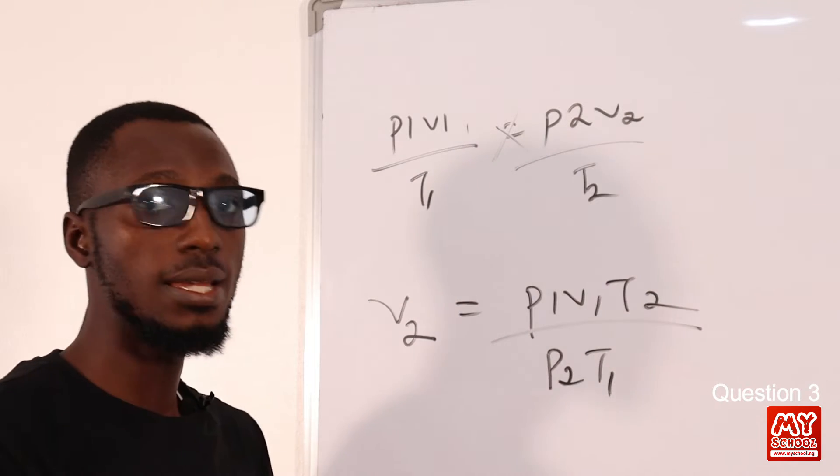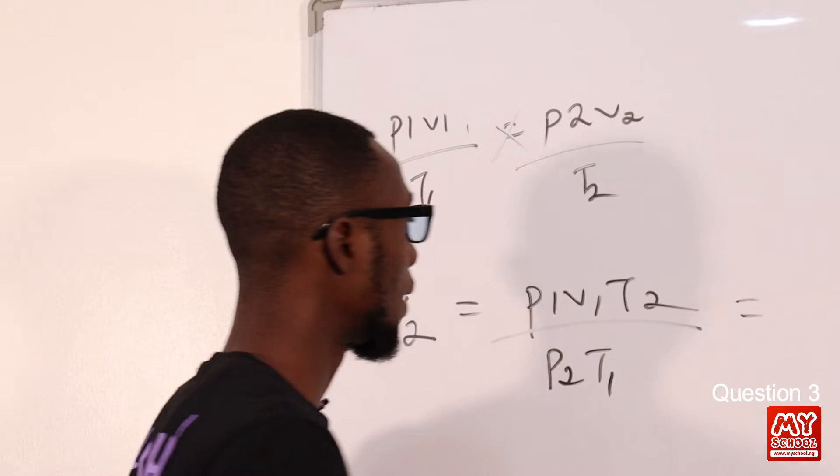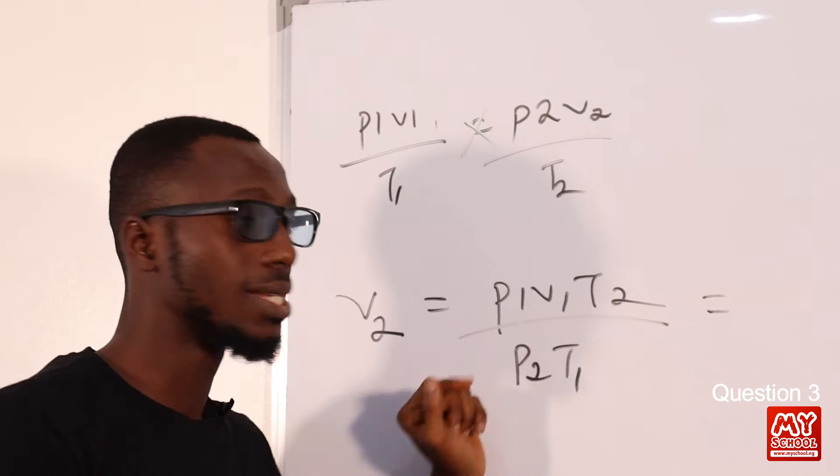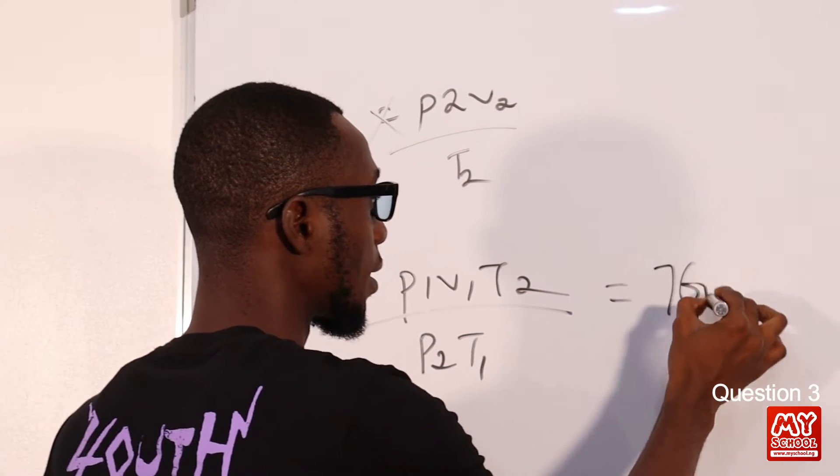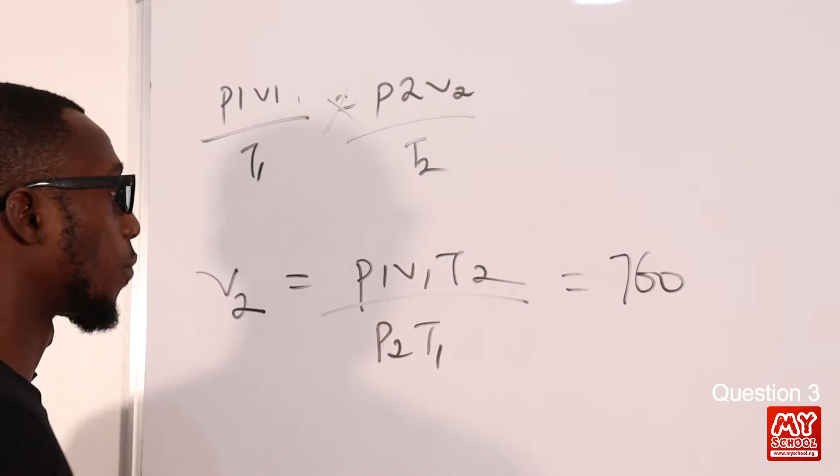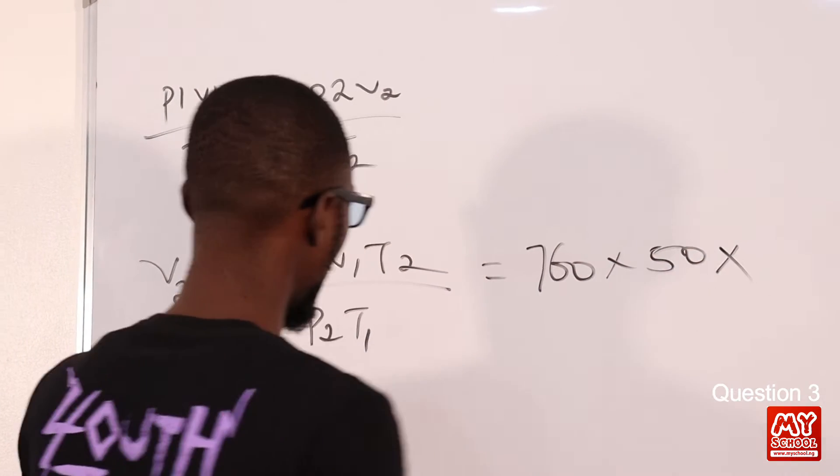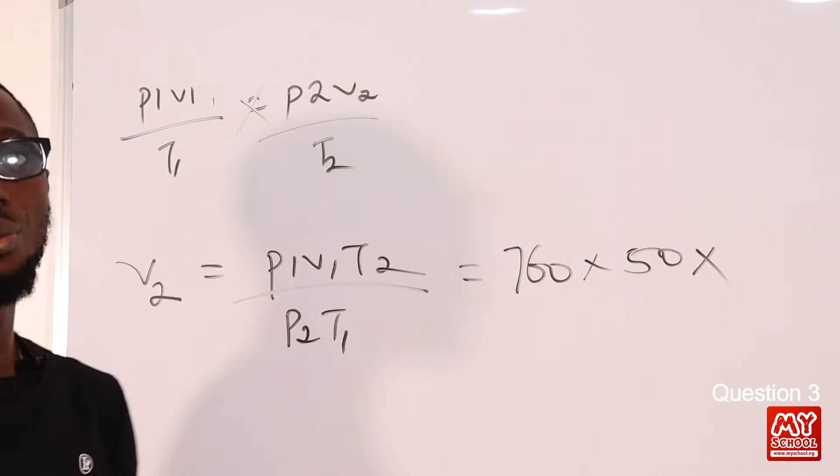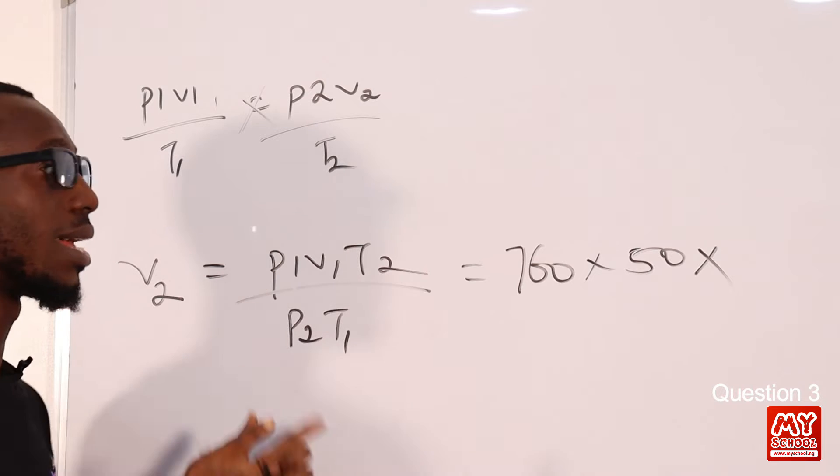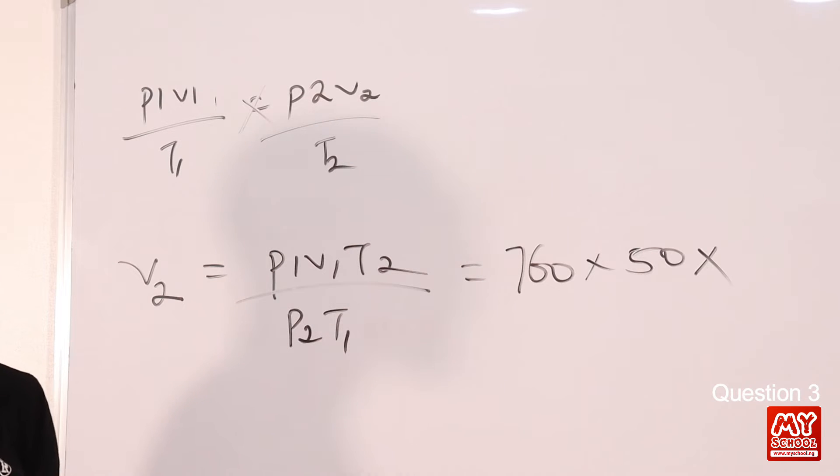We can now fill in the information. We have P₁ at 760 (remember 765 minus 5 of water), then we have V₁ times 50.